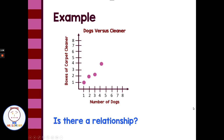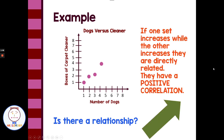Is there a relationship here? It looks like as the number of dogs increases, the more dogs, the more boxes of carpet cleaner used. And the less dogs, the less boxes of carpet cleaner used. So as one increases, the other increases, and as one decreases, the other decreases. This is what we would call directly related. If one set increases while the other increases, they're directly related — that's called a positive correlation.